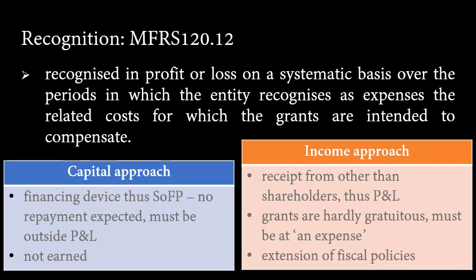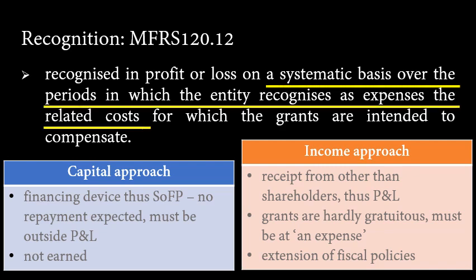And because income and other taxes are expenses, it is logical to deal also with government grants, which are an extension of fiscal policies, in profit or loss. One thing to highlight is that it is very important that the grants be recognized on a systematic basis and not based on receipts of the resources or whenever the money is received, because that will be against the accrual accounting assumption. However, recognition based on cash basis would be acceptable only if no basis existed for allocating a grant for periods other than the one in which it was received.